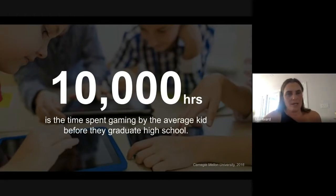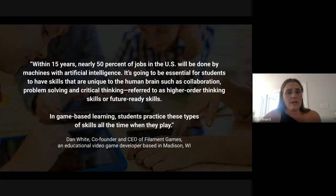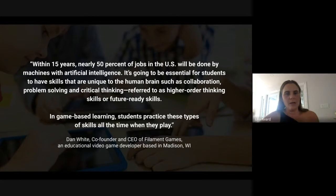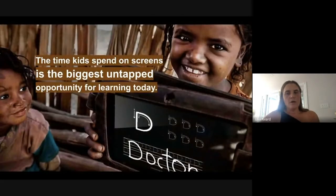That got us extremely motivated to access this parallel track of learning to deliver curriculum. In the next 15 years, about 50% of jobs in the US and Canada will be focused on machines and artificial intelligence, so it's essential for students to have uniquely human skills such as collaboration, problem solving, and critical thinking — referred to as higher-order thinking or future-ready skills. These are built into the economy of great games already.